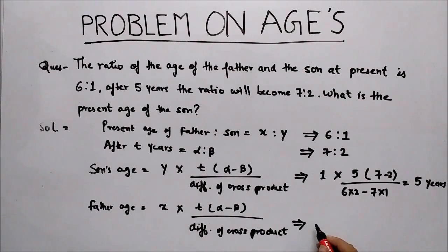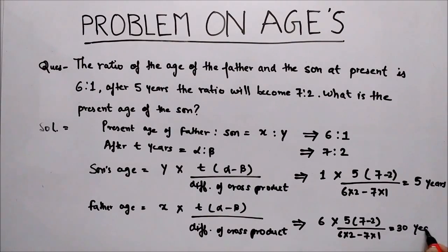Now calculate father's age. Put the values here again. Here x is 6 times t, the number of years is 5, (7 minus 2) upon (6 times 2 minus 7 times 1) equals 30 years.